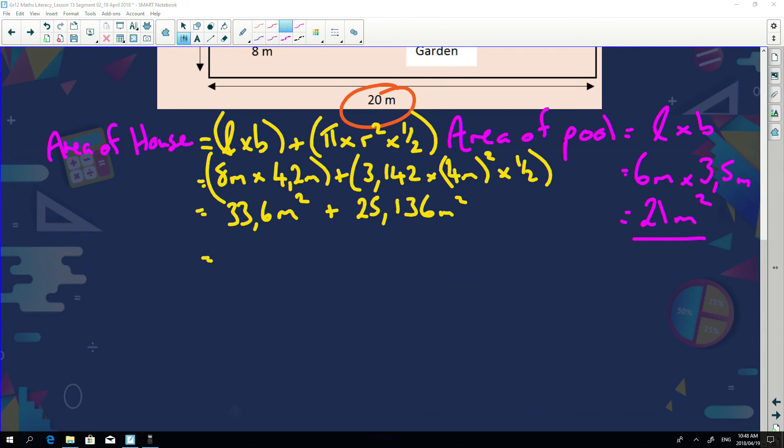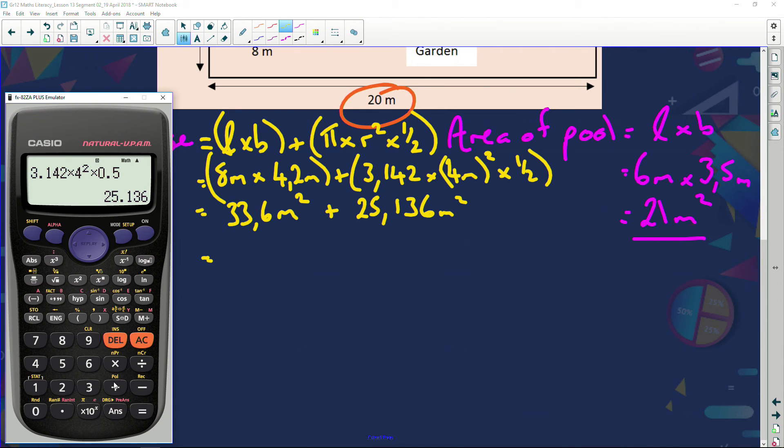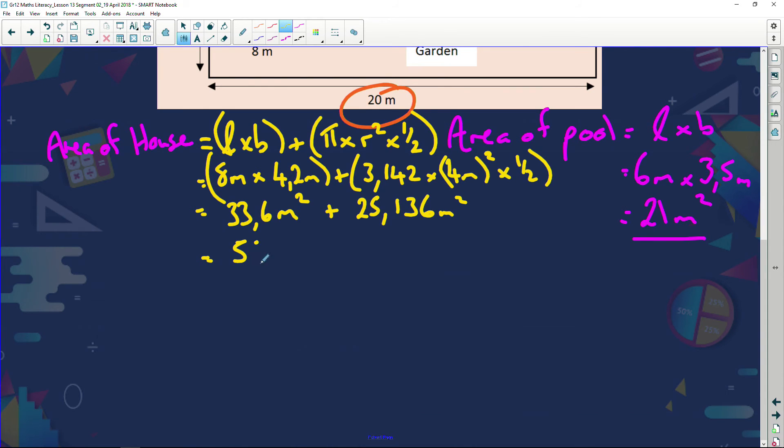We're going to add those up now. So to that we're going to add 33.6. And my answer is 58.736. So 58.736 meters squared.